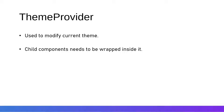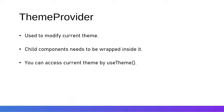We need to wrap the child components with the ThemeProvider to use the modified theme. We can create a modified theme variable, export it, pass the theme prop, and use that theme inside the child components — for example, to change the primary color. You can access the current theme of Material UI via useTheme, which is available inside the MUI material package, so you don't need to install anything extra.